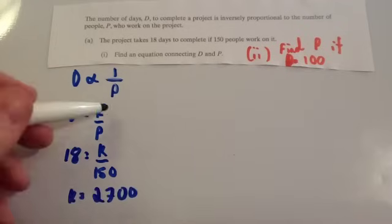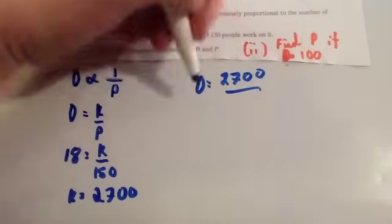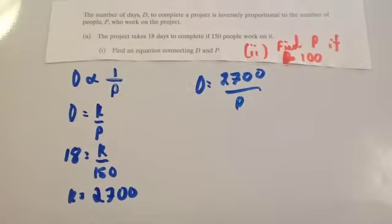So, then we get our formula. We put that back in to get our formula. So, D equals 2,700 divided by P. Fantastic.